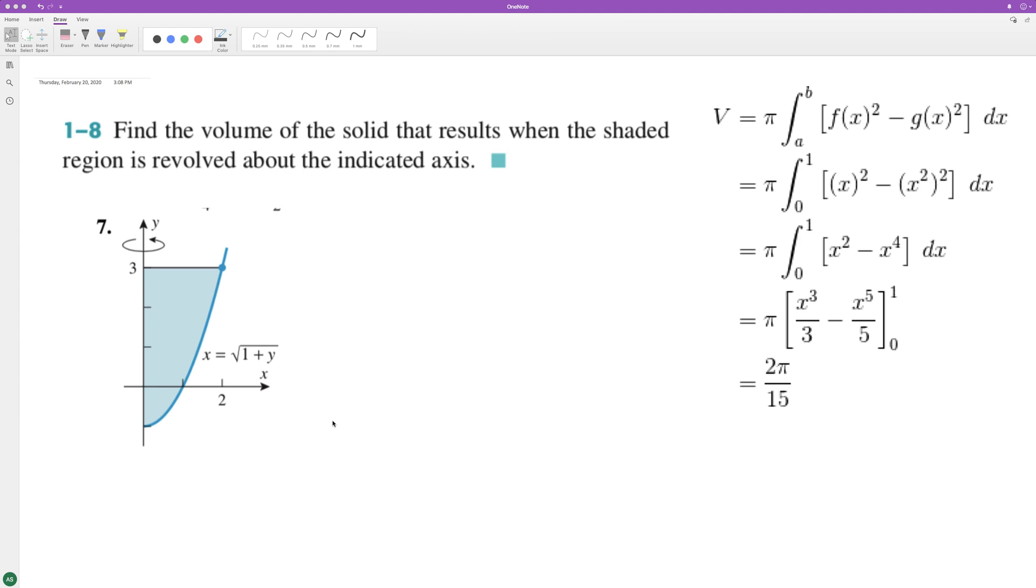We're integrating the following and flipping it around the y-axis, so we just need to integrate from negative 1 here to 3. This is using pi r squared for the washer method, so we're going pi from negative 1 to 3.